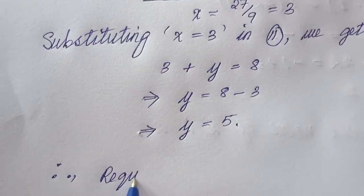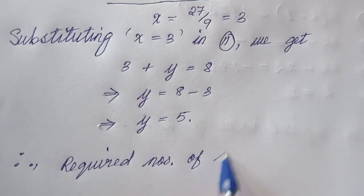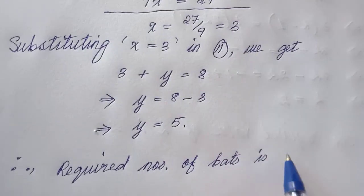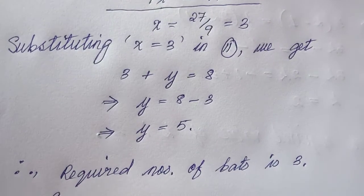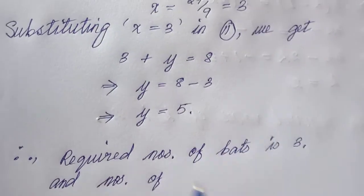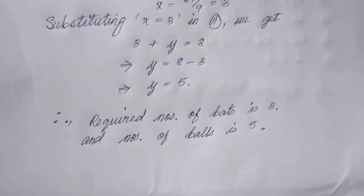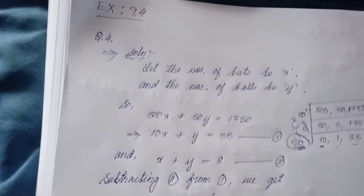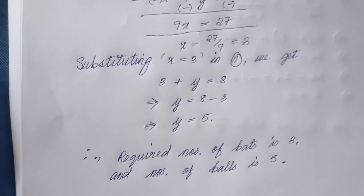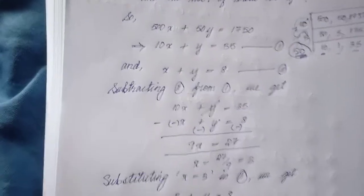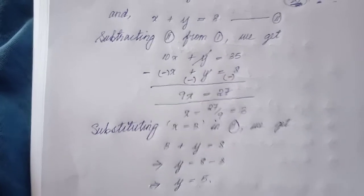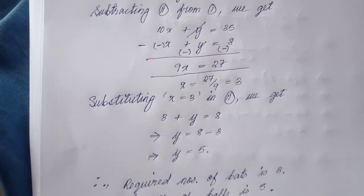Adding 1,500 and 250 gives 1,750 rupees, which confirms our answer. Therefore, the required number of bats is three and the number of balls is five. So he bought three bats and five balls — that is the answer to question number four. It's very simple. If you are not clear, you can ask me anytime during class. That's all for today, have a nice day. Thank you.